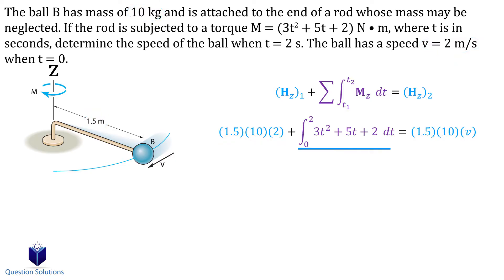For the angular impulse, the time starts at 0 seconds, and we need the velocity at 2 seconds. So that's the upper bound. And the moment about the z axis is given to us in the question.